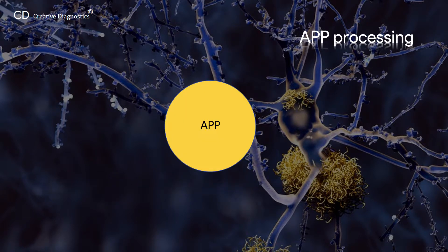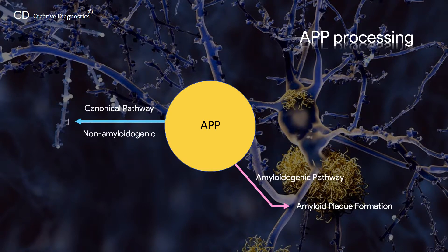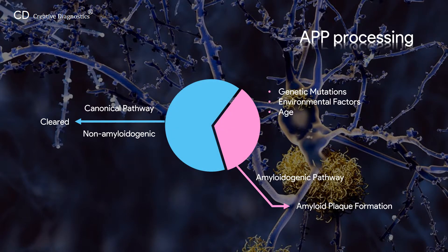APP can be sequentially cleaved in two different ways by different sets of enzymes. An amyloidogenic pathway leads to amyloid plaque formation, while a canonical pathway does not. Almost 90% of APP undergoes the non-amyloidogenic canonical pathway and 10% the amyloidogenic pathway. However, the ratio can be altered by genetic mutations, environmental factors, and the age of the individual.